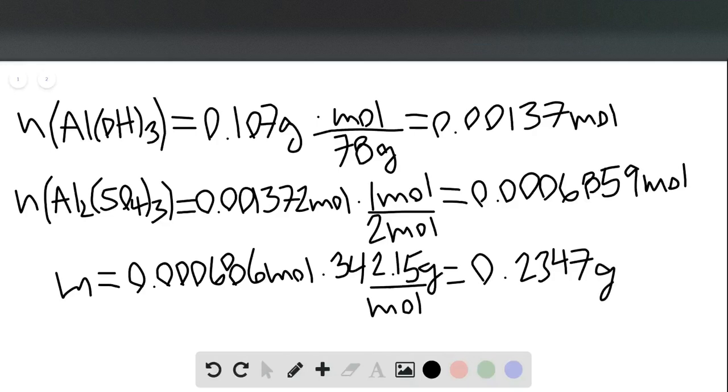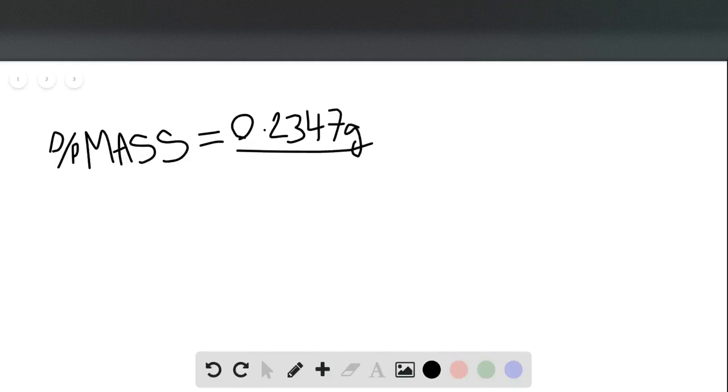And now all that's left to do is to calculate the percent mass. So the percent mass is going to be equal to the mass of the solute divided by the mass of the solution times 100 percent. In this case, our solute is our aluminum sulfate. So that's 0.2347 grams divided by our complete mixture of 1.45 grams times 100 percent, which gives us 16.2 percent.